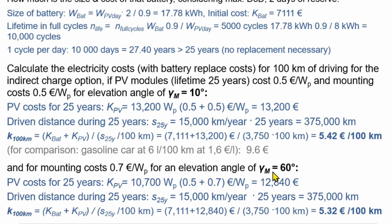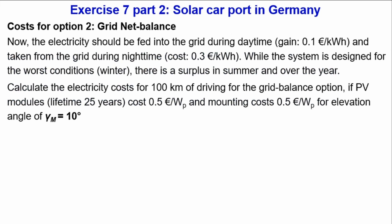Now consider the grid balance option — no battery, but feed surplus electricity into the grid. You receive about 10 cents/kWh from the utility (currently around 9.6 cents, but we use 10 here), and charge your vehicle at nighttime paying 30 cents/kWh. You have a surplus in summer and over the year. Let's calculate how much that costs.